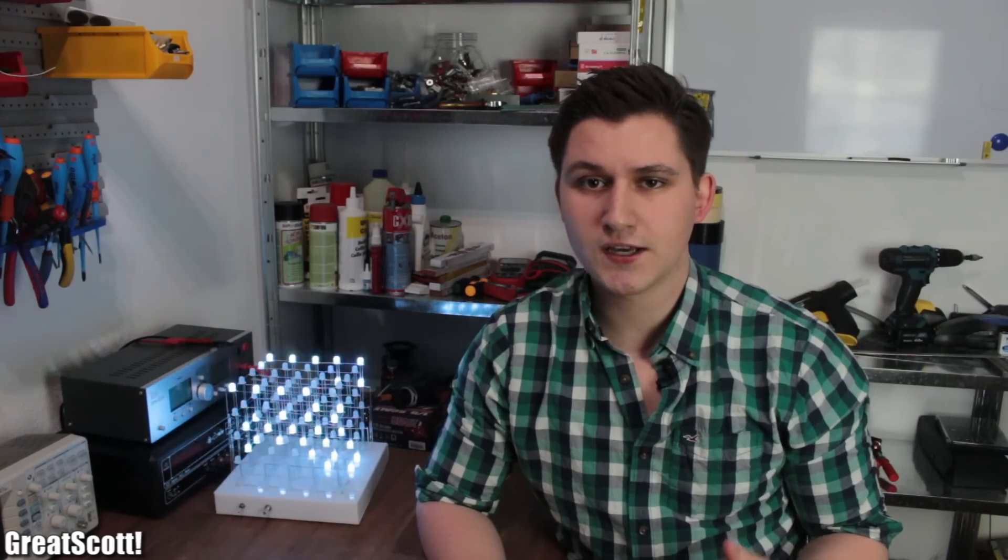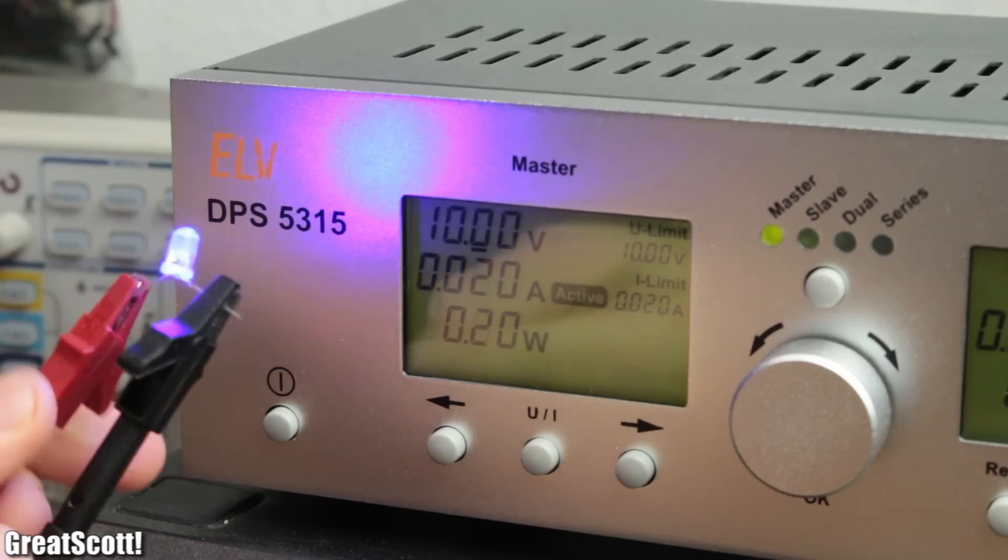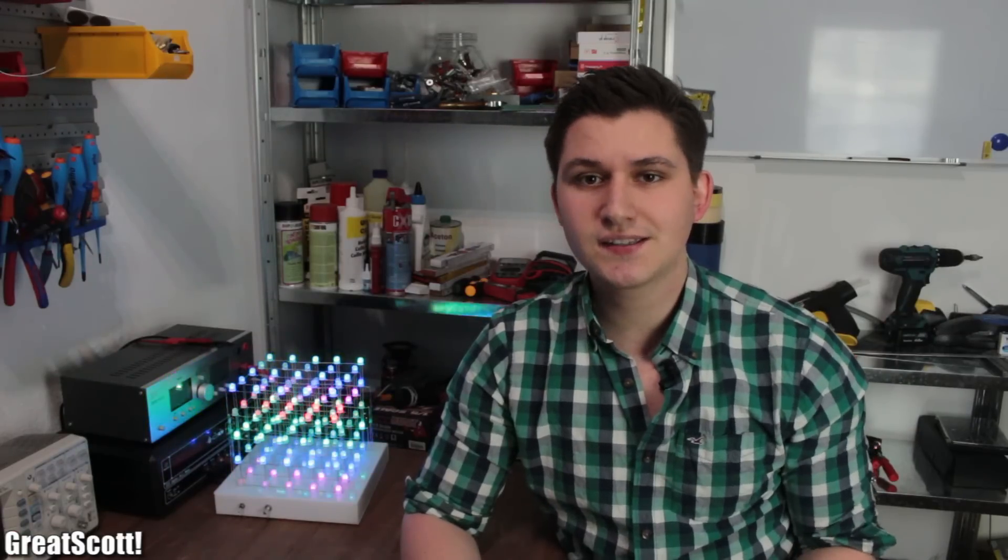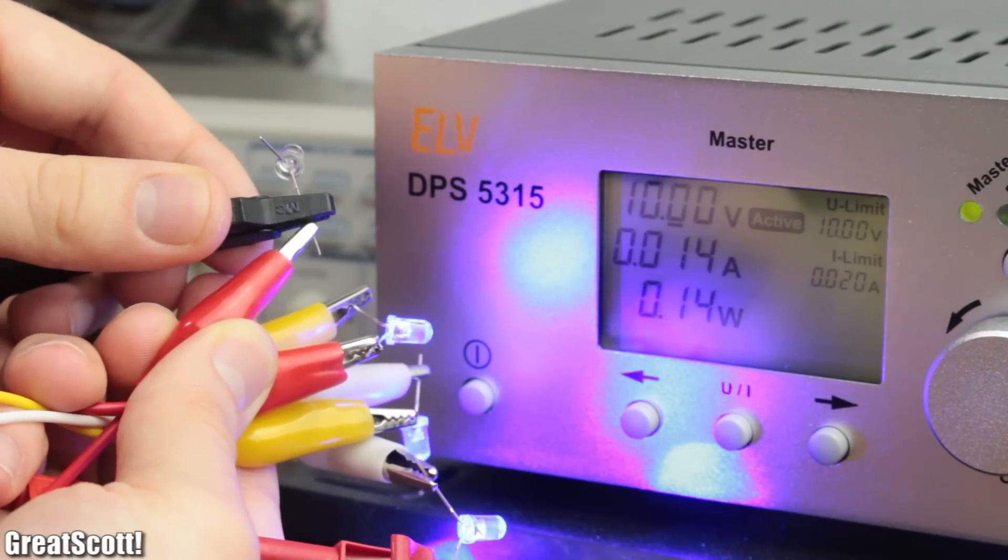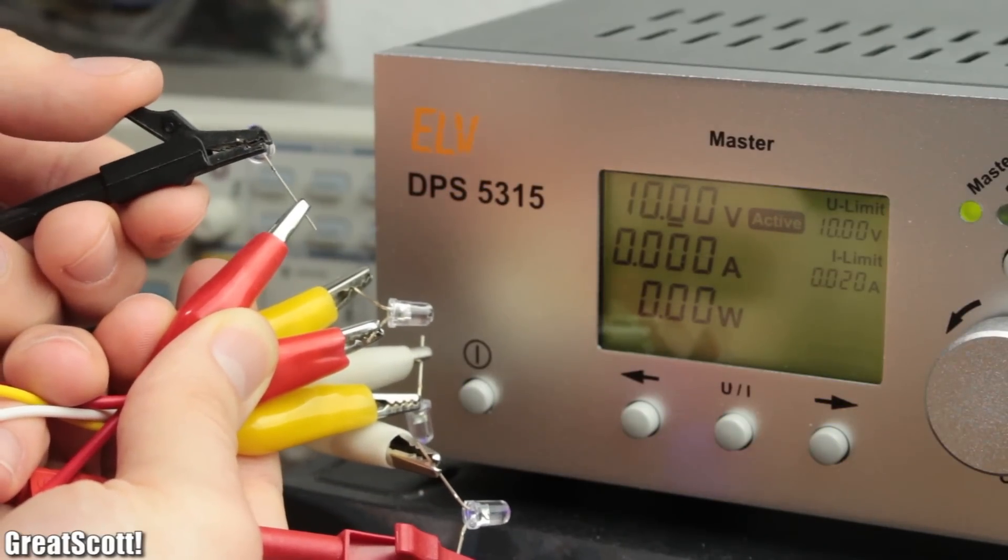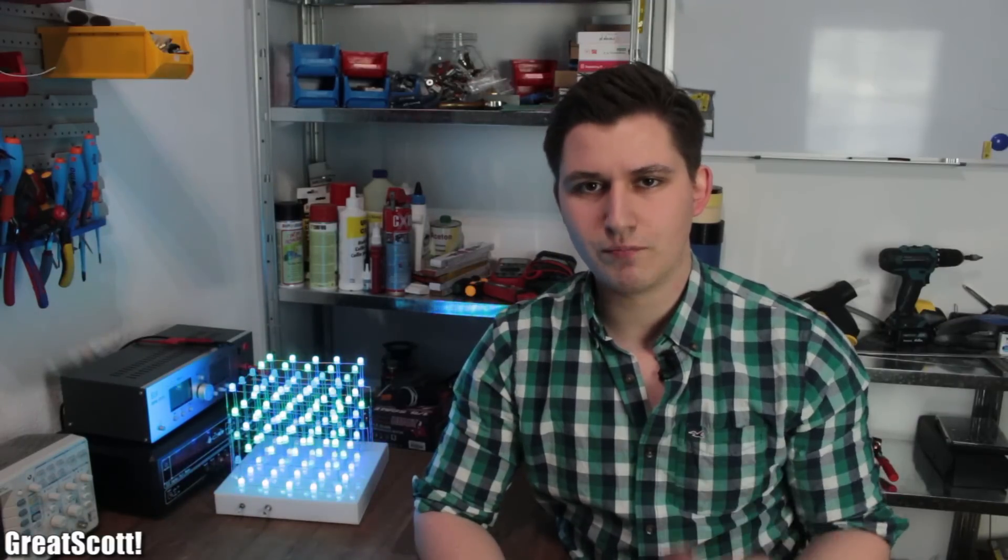A constant current source on the other hand, like the name already suggests, will pump a set current into your circuit. This can be useful for 5mm LEDs, since the voltage drop of seemingly identical LEDs is never completely the same. But this constant current can also break down if you exceed the maximum output voltage your constant current source can handle. It's a bit complicated. I might do a versus video about it.